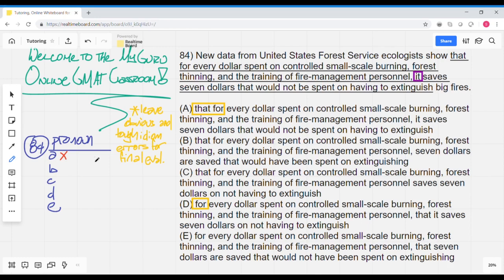D, for every dollar spent on controlled small-scale burning, forest thinning, and the training of fire management personnel, that it saves. Oh, there's that it again. So D goes away.